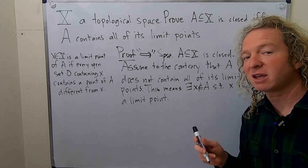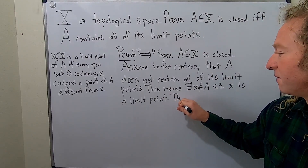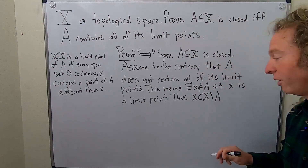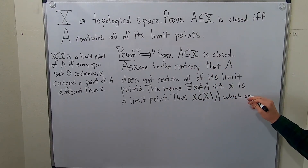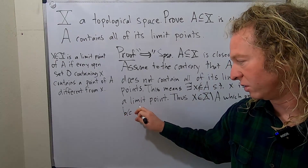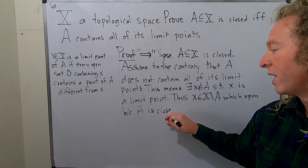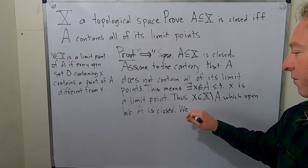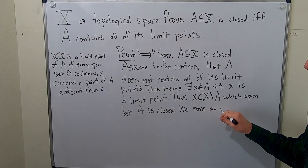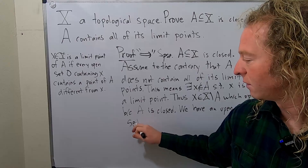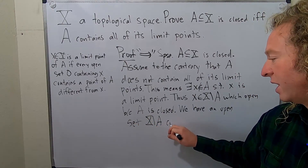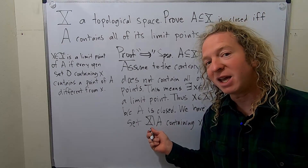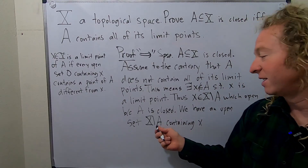What does it mean for X not to be in A? It means it's in the complement of A. Thus X is in X set minus A, which is open because A is closed. So we have an open set, X set minus A, containing X, but it does not contain points of A different from X — in fact, it contains no points of A.